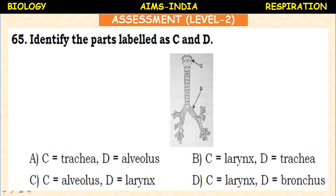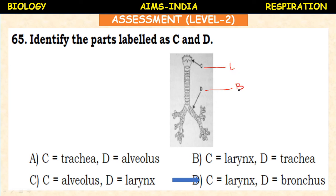Next: identify the parts labeled C and D. D is the bronchus (bronchi) and C is the larynx. The trachea is a tubular structure made up of C-shaped cartilage, which prevents it from collapsing. It divides into two branches called bronchi (each one is a bronchus), which further divide into smaller branches called bronchioles, which open into the lungs.